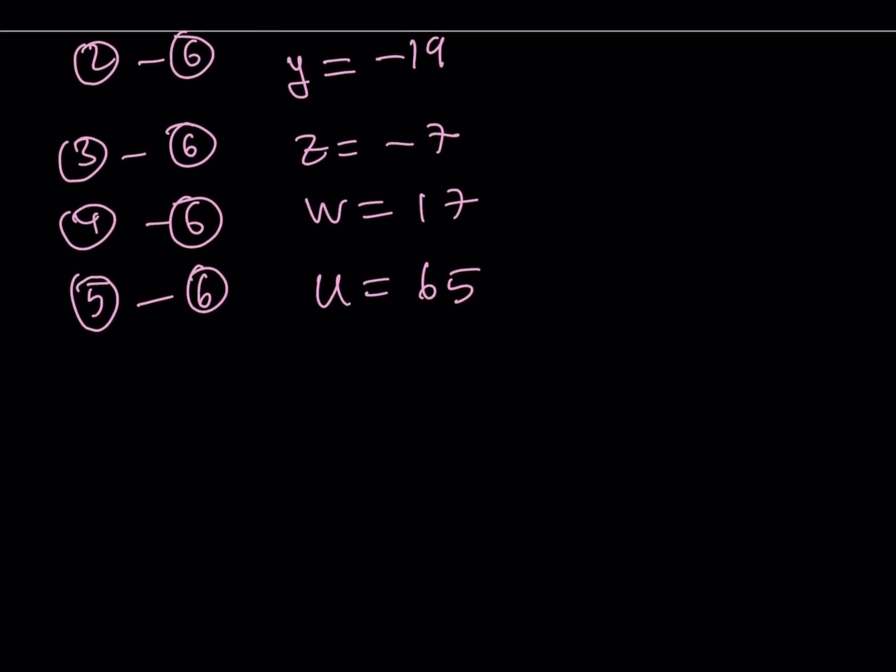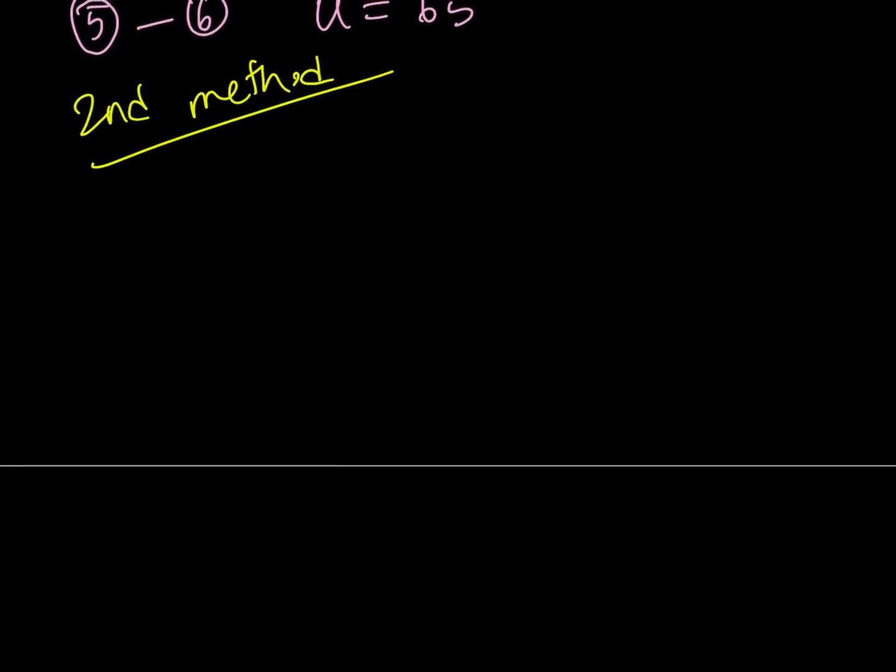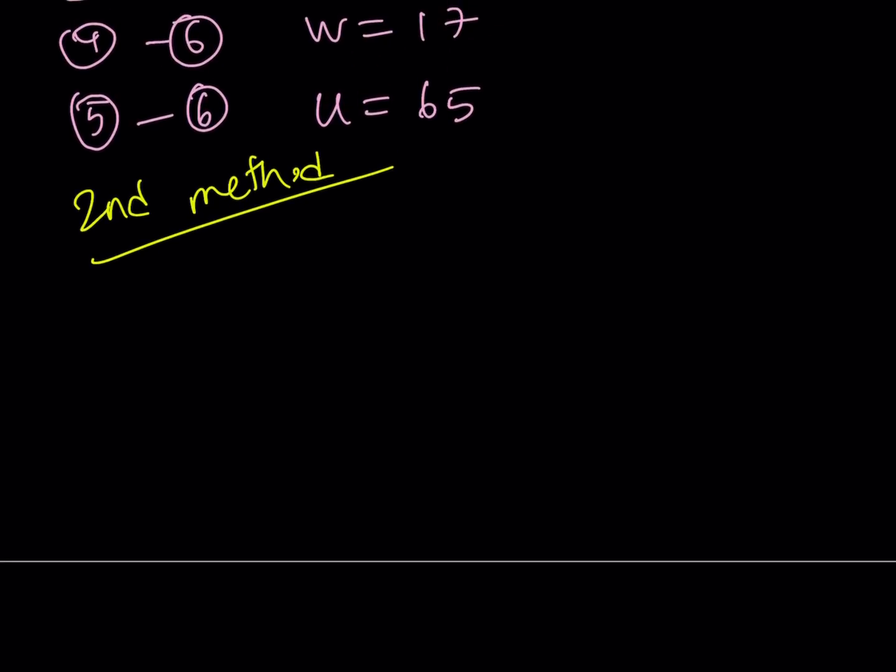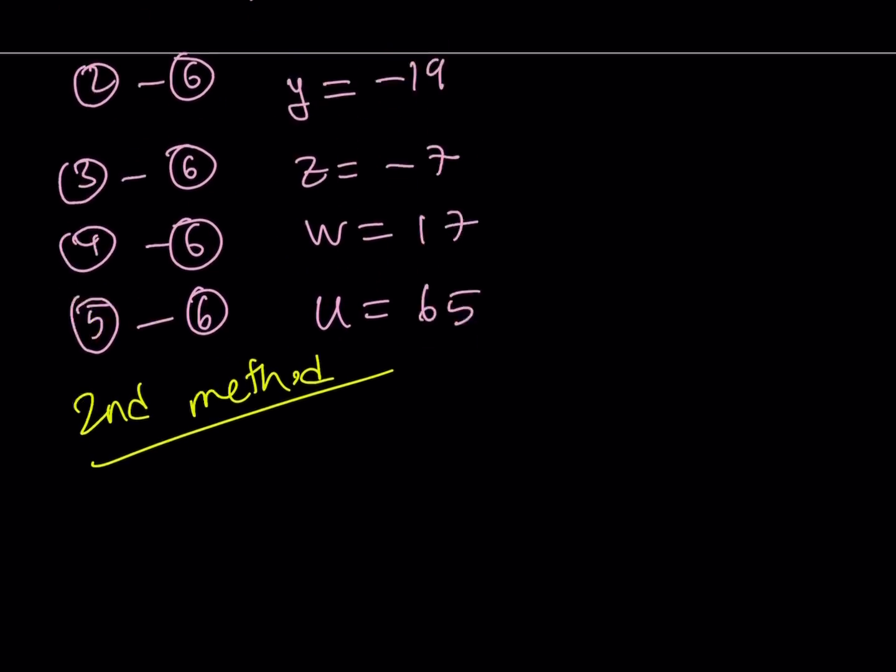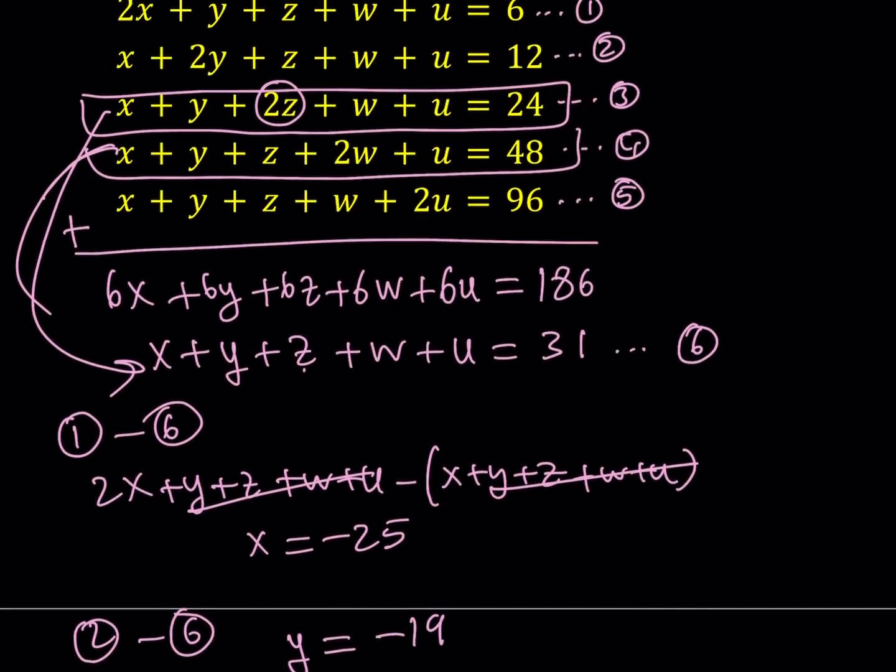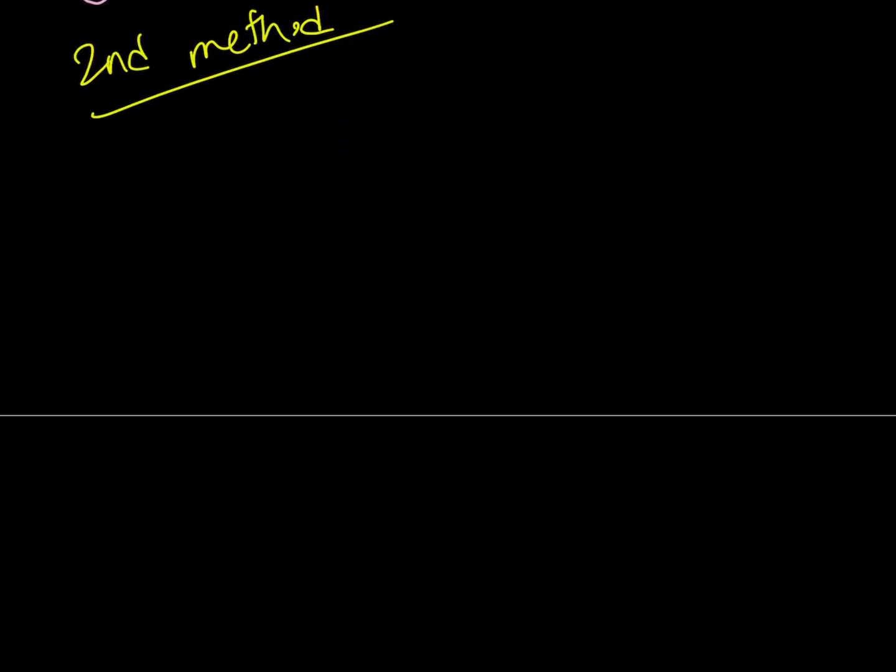Let's go ahead and talk about the second method, my second method. The second method involves basically the following. We can directly subtract these equations. So, for example, if you subtract two minus one, instead of just going back and forth, can I just write it? I hope you don't mind. So, if you subtract two minus one,